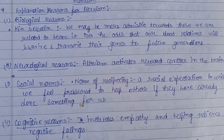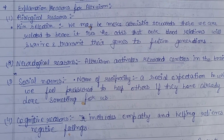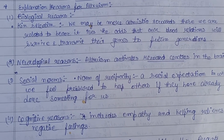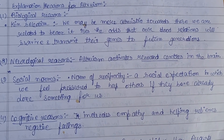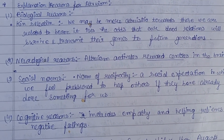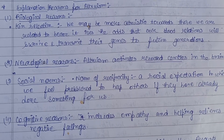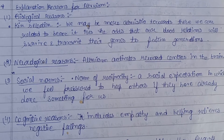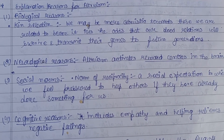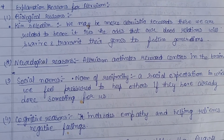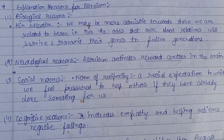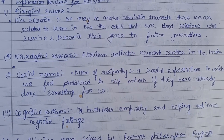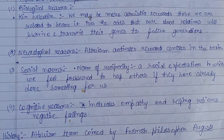These reasons also apply to human beings — why they are altruistic toward one another. The first is the biological reason: kin selection. We may be more altruistic towards those we are related to, because in animals also, altruistic behavior is seen toward close ones. It increases the odds that our blood relations will survive and transmit their genes to future generations.